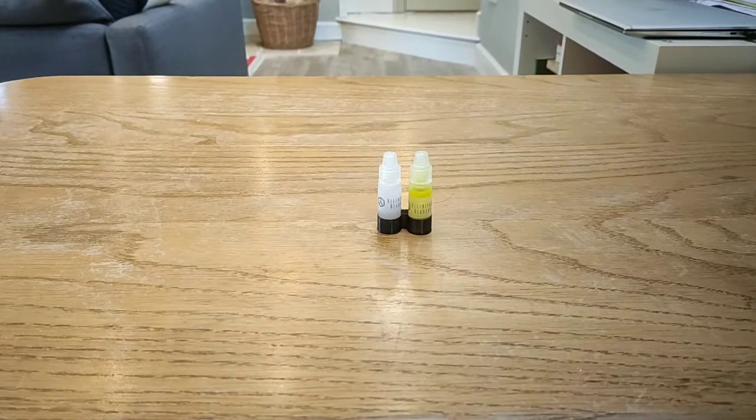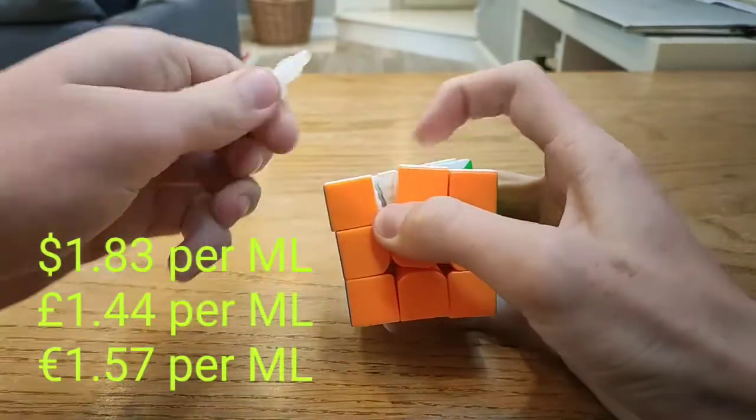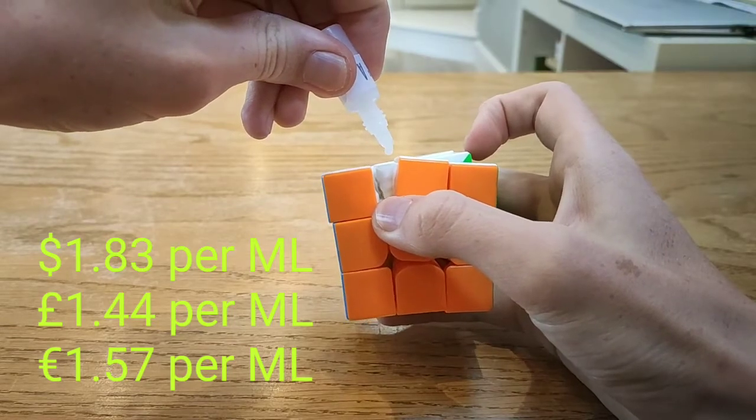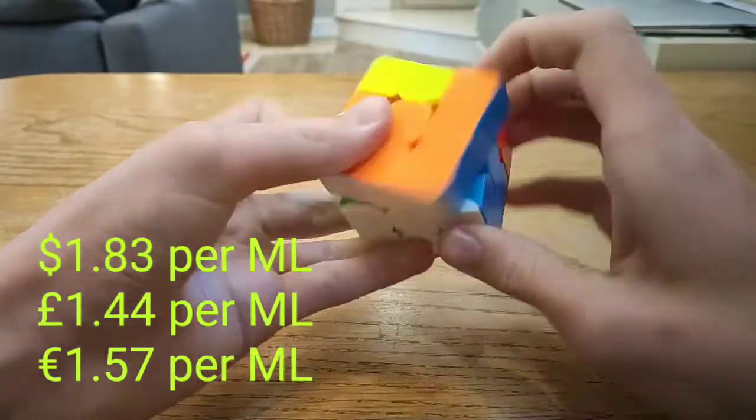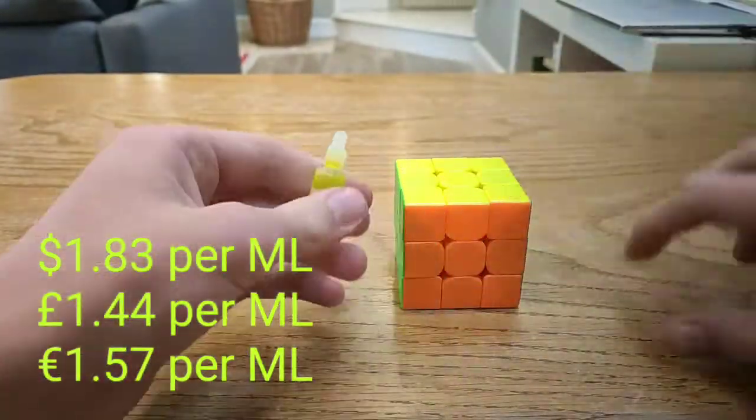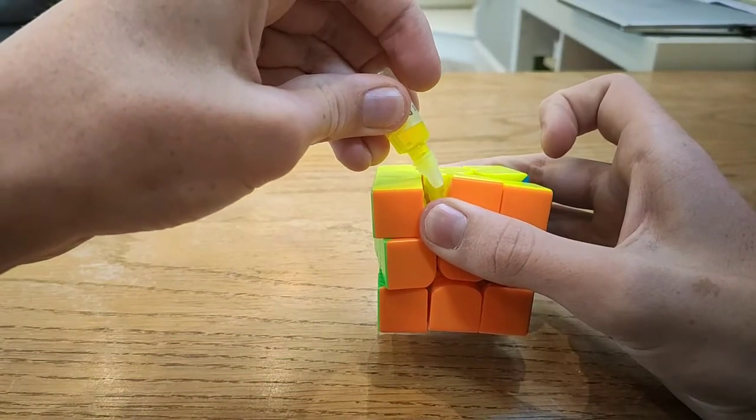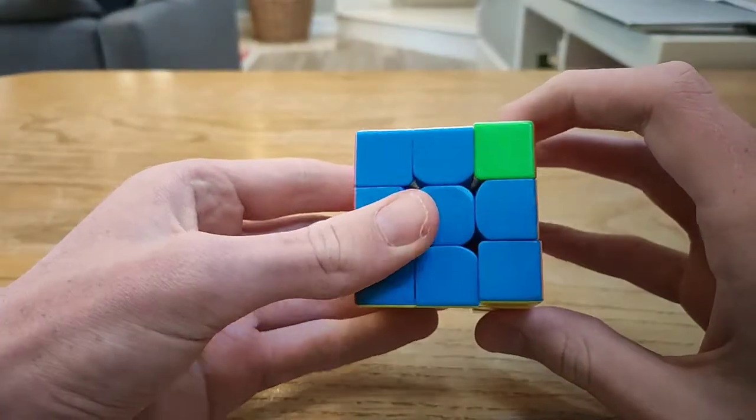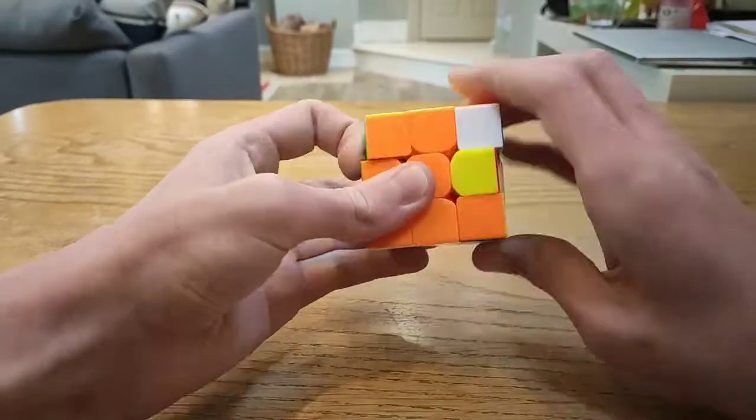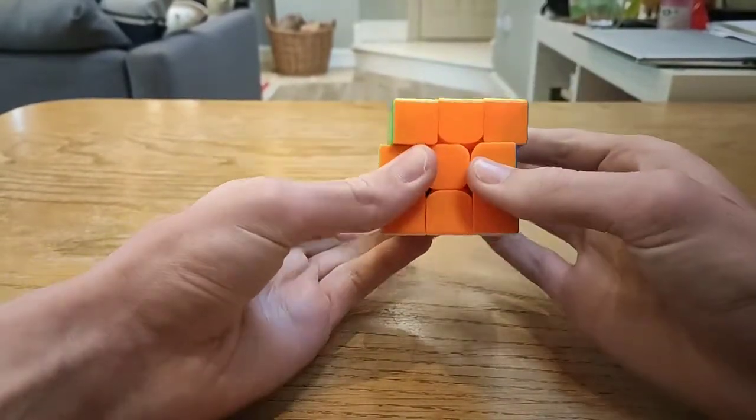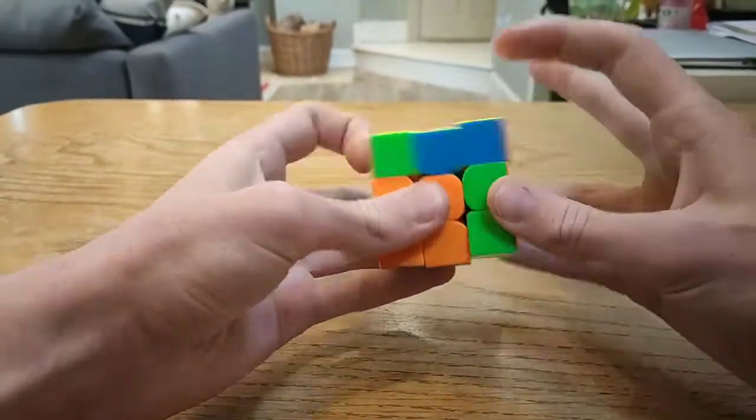Next up we have angstrom solaritas, the two-part lubricant. The effect of angstrom solaritas can vary depending on how much of each part you put in, but in general it provides both a quick and smooth feel at the same time.